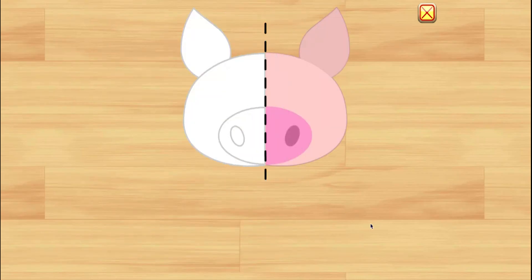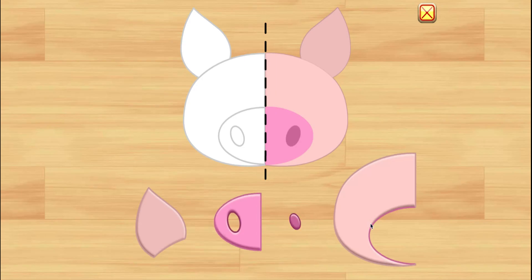This picture is symmetric. Complete the other side. So what we want to do is put these pieces on the picture so that it looks the same on both sides. That means it'll be symmetrical.